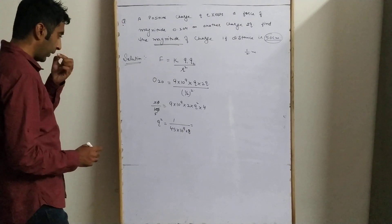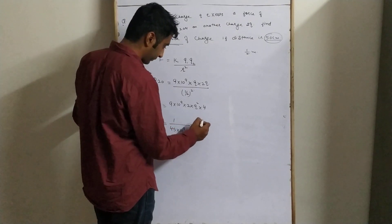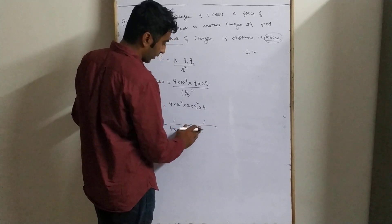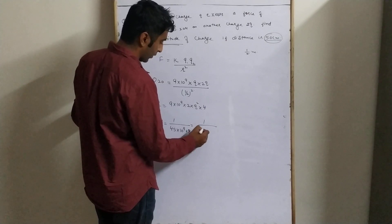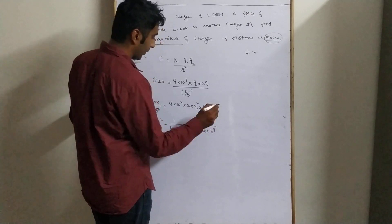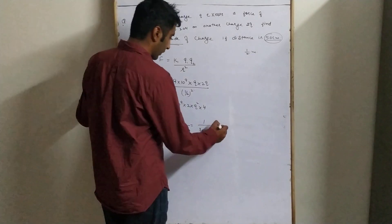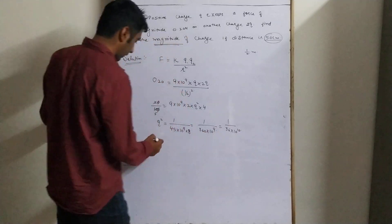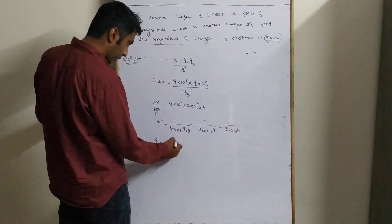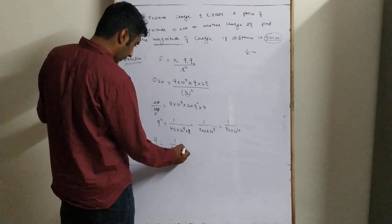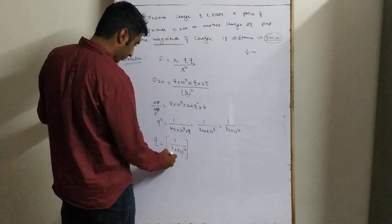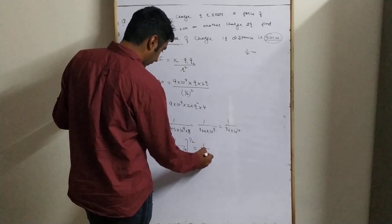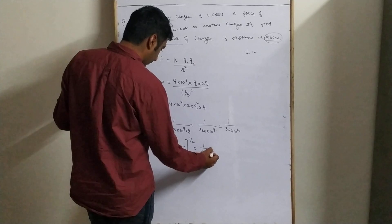Working through: 1/45 becomes 1/36 × 10⁻¹⁰. Therefore q = √(1/36 × 10⁻¹⁰) = 1/6 × 10⁻⁵ Coulomb.